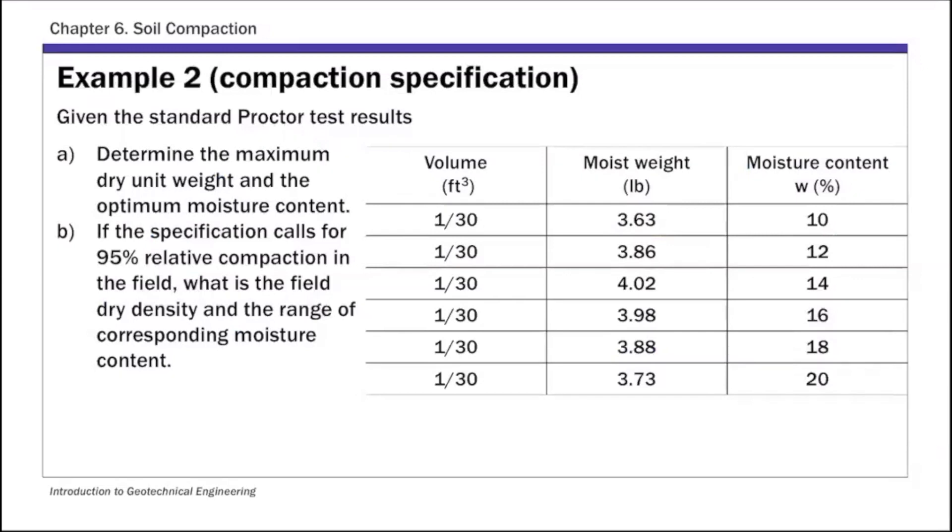So this is example two, compaction specification. In this example, we are given standard proctor test results. We're going to use that result to check if our field compaction effort meets the specification, or given that specification, what is the appropriate dry unit weight after compaction.